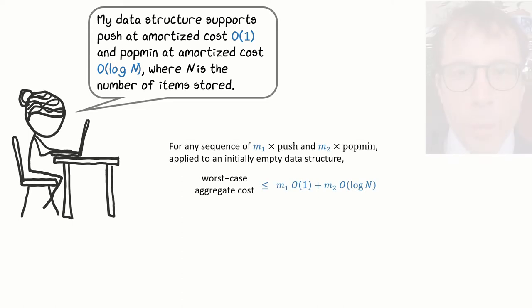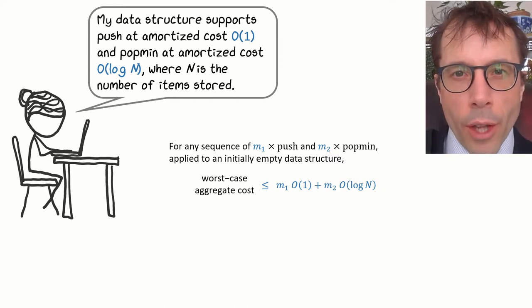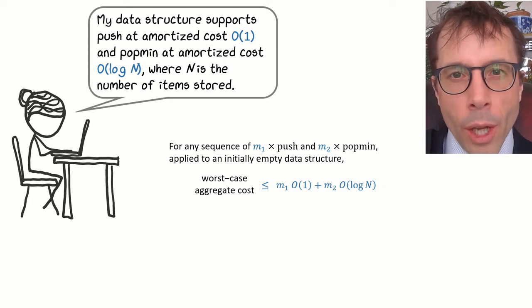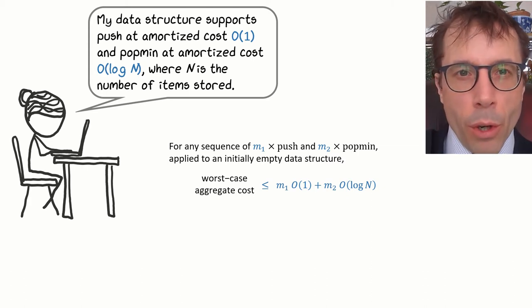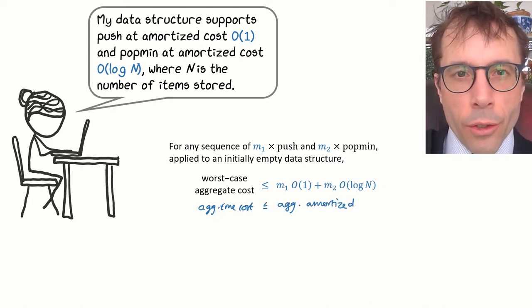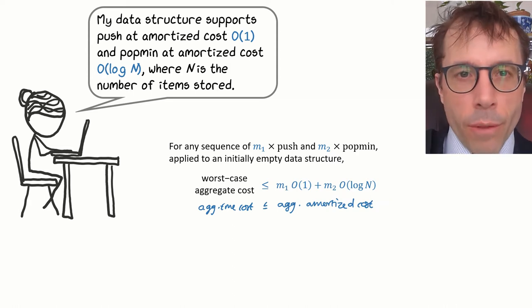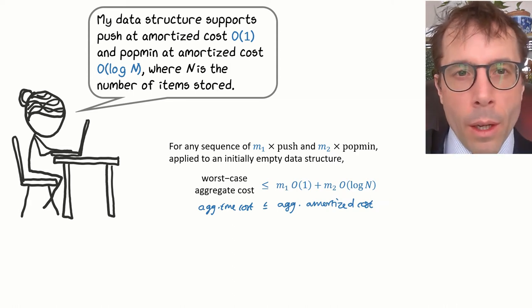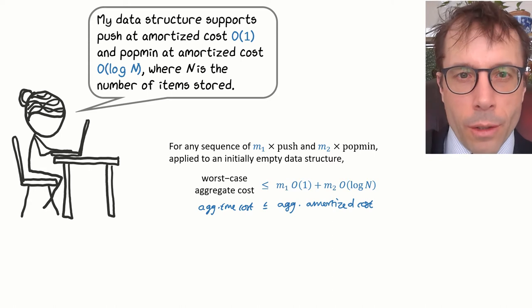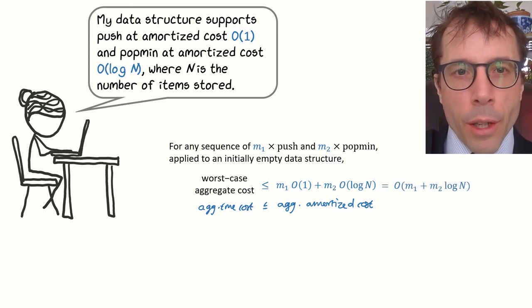They're making a claim about aggregate costs. They're saying that for any sequence of operations, we can get an upper bound on the aggregate cost of the sequence by adding up the amortized per-operation costs. This is just restating the fundamental inequality. And then lastly, a little bit of simple algebra to tidy up the expression.